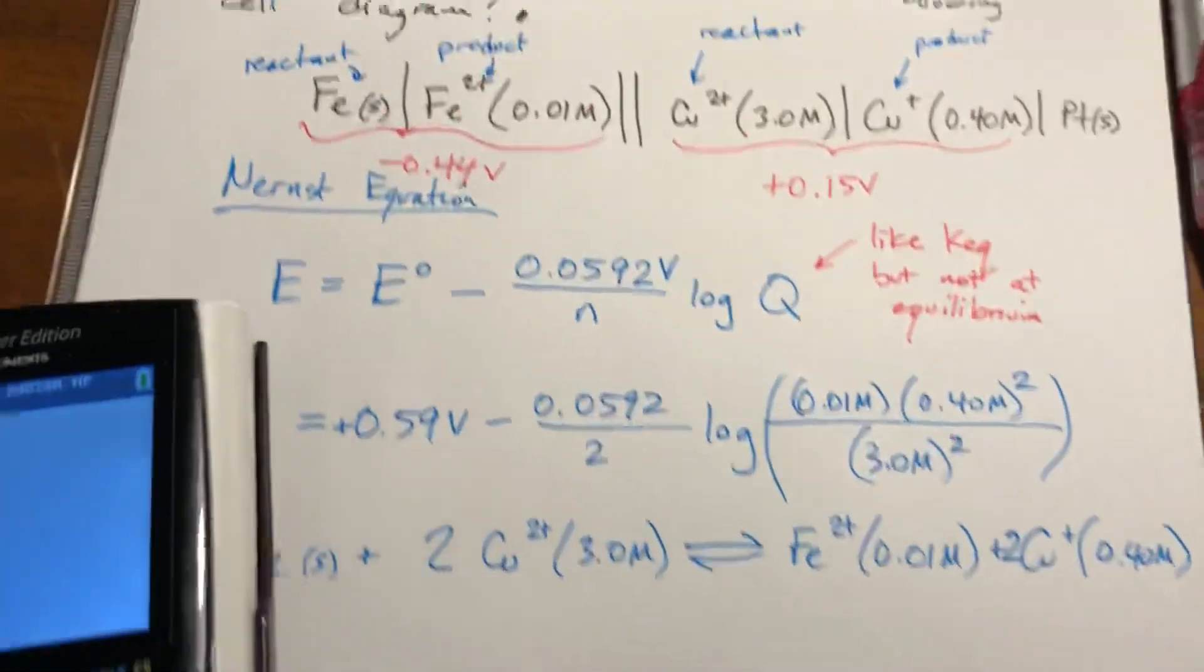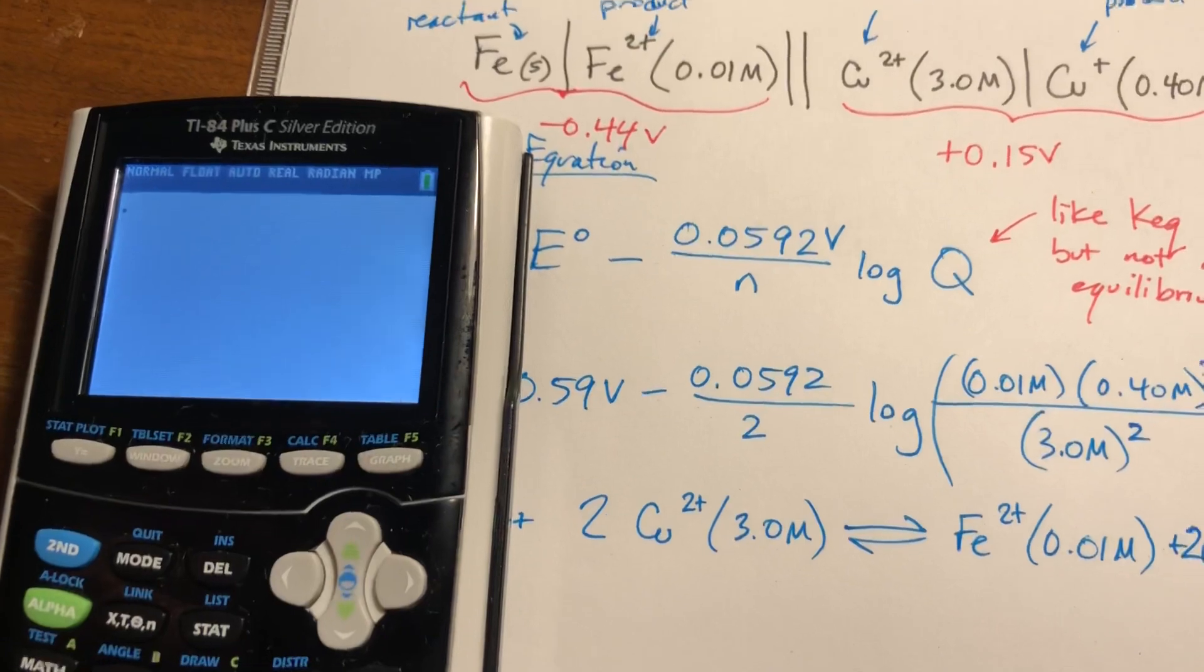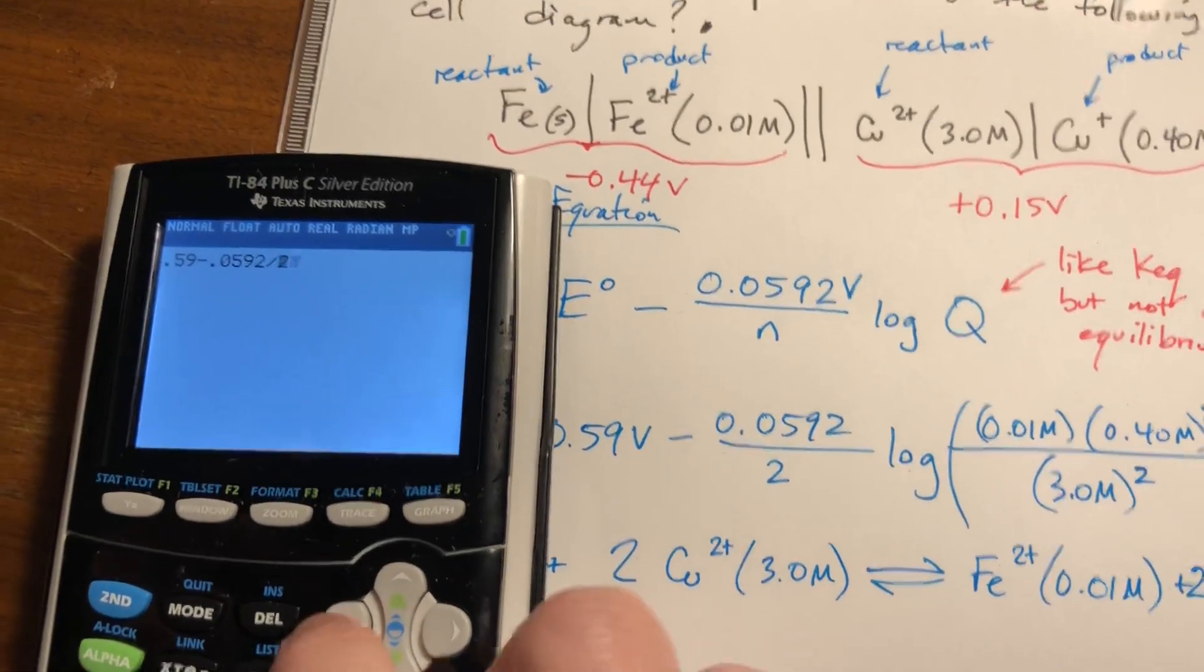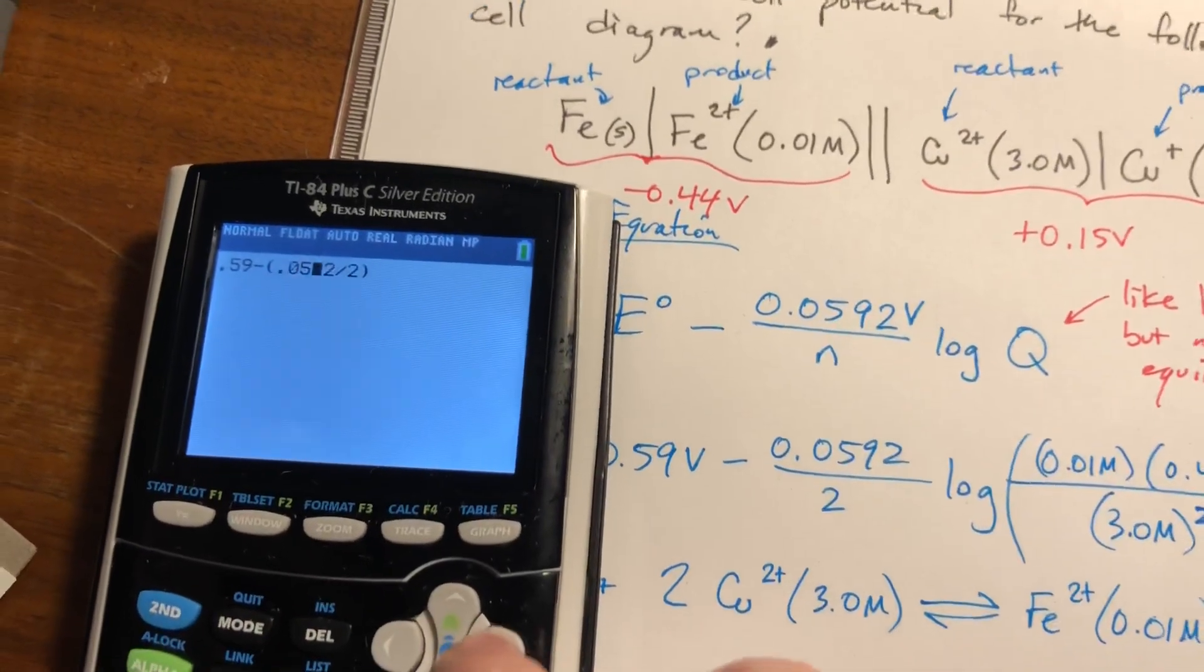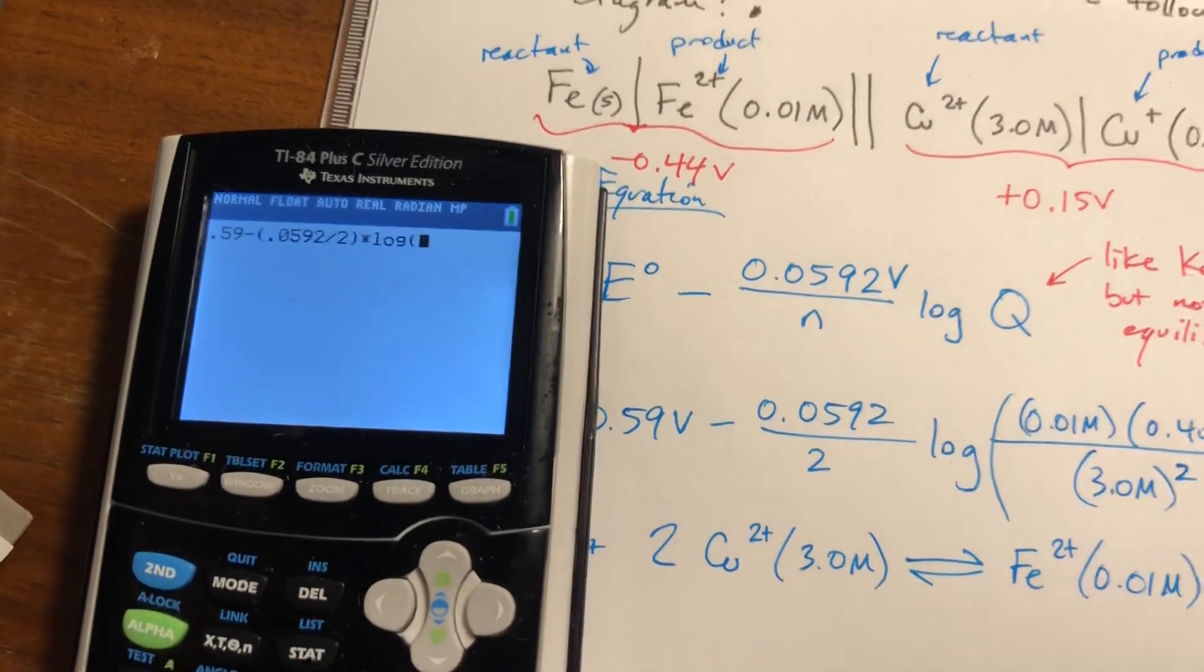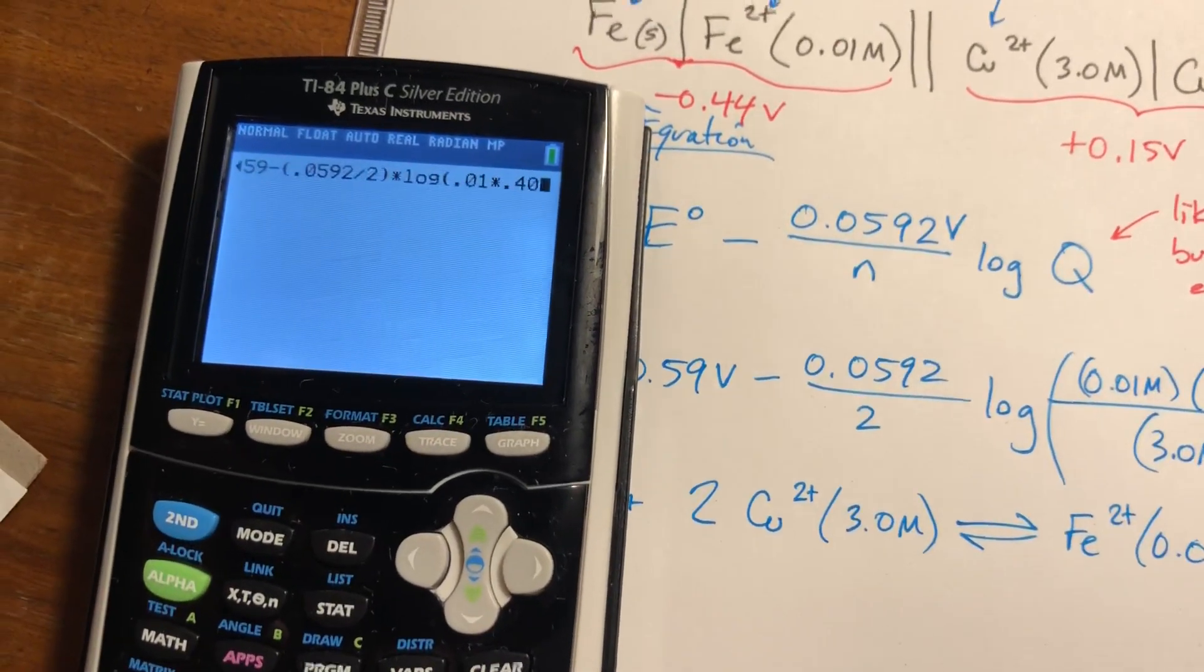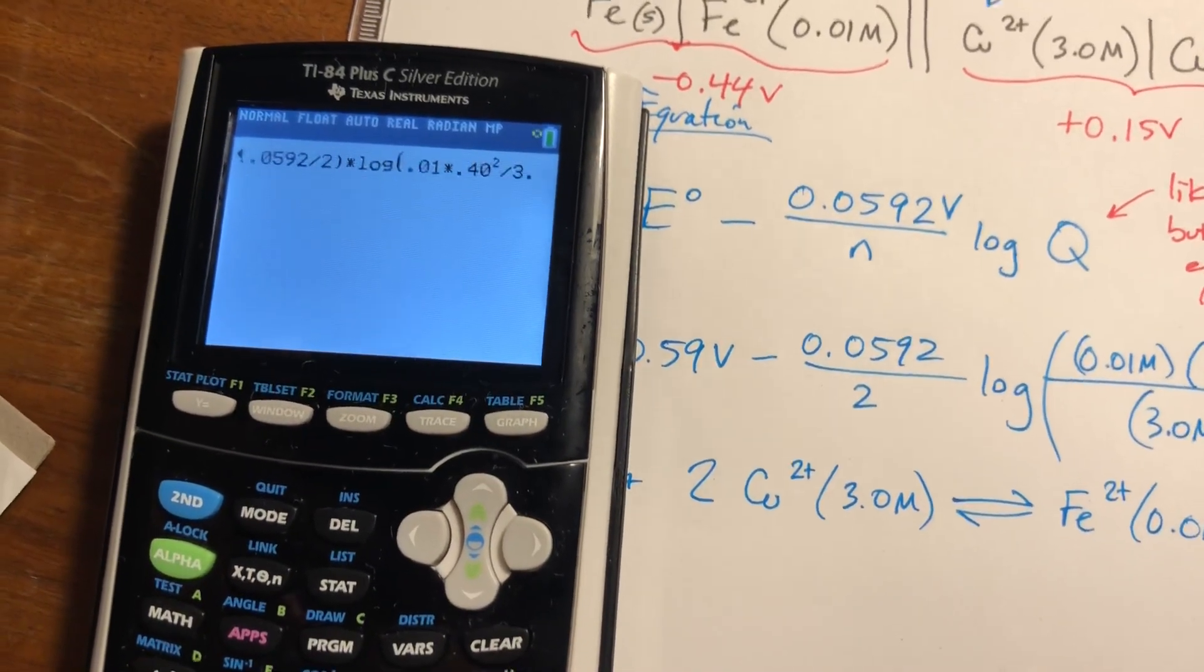So plugging everything in, our standard voltage was 0.59 minus 0.0592 divided by 2. I guess I probably need to put parentheses around some of that, times the log of 0.01 times 0.40 squared divided by 3.0 squared.